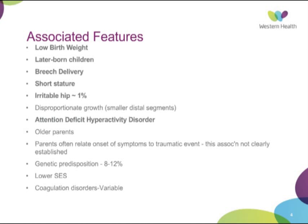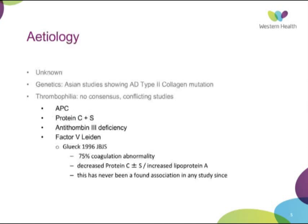Other factors have been implicated. There is some genetics behind it — there is an 8 to 12% risk of a child having the disease if a parent has had it. There is also a significant amount of literature about coagulation disorders and how they have come about to affect Perthes disease.